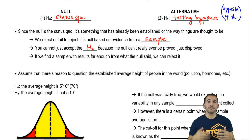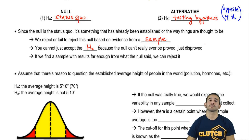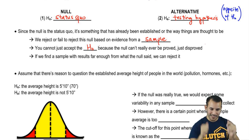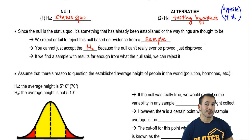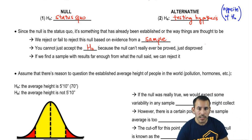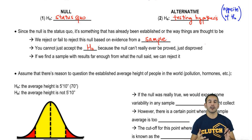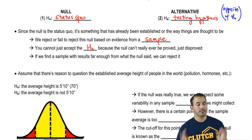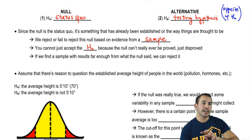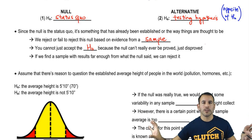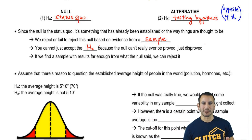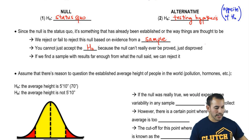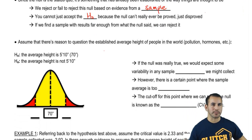You can put a lot of support behind a null hypothesis, but you can never say it's right. If we find a sample with results far enough from what the null said it should be, we can reject it. Going back to the concept of average heights — if it's established that the average height is some number and we find a sample far off on one end or the other, it gives us evidence to say that maybe that average height has changed.